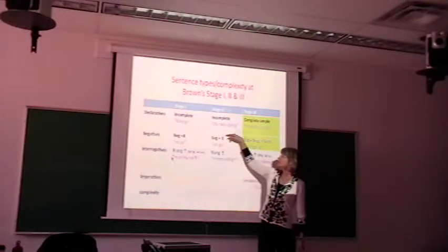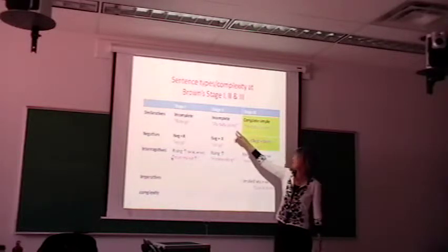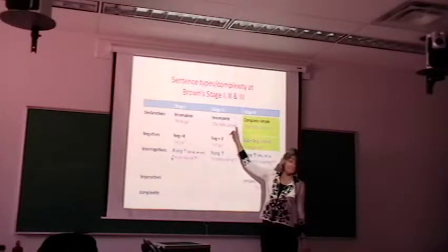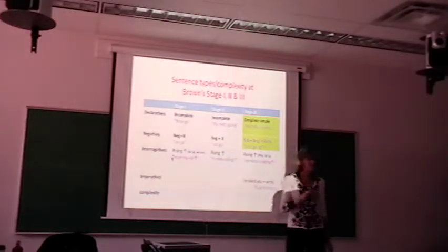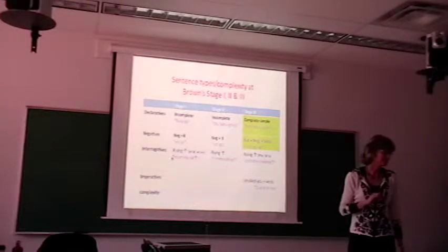In stage 2, they're still incomplete, but there's some elaboration. This could even be stage 3 because we've elaborated the noun phrase and the verb phrase. But the important thing to remember in stage 2 is declarative sentences are still incomplete.